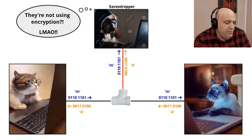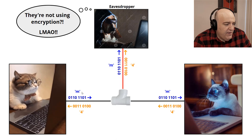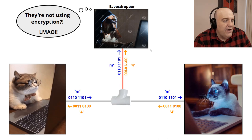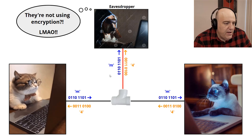For example, two parties are communicating, sending plaintext back and forth over the communication channel. The letter M is represented by certain bits and sent over the channel. When the other party sends something back — the number four in ASCII — those bits travel over the channel too. But there's a split in the wire, and every communication is captured by the eavesdropper. If the communication is not encrypted, the eavesdropper can easily read the bit patterns and know exactly what is being communicated.